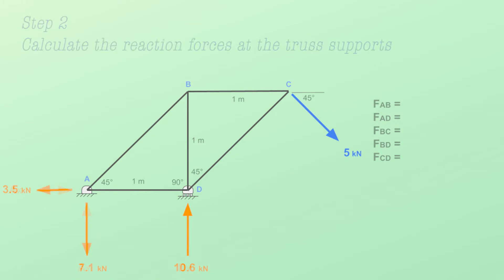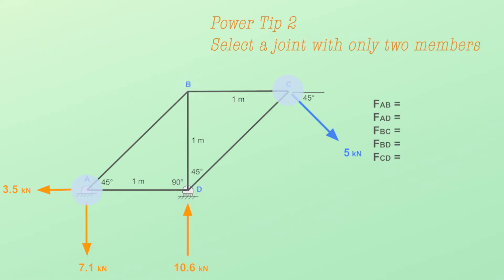Step number 2 – Calculate the reaction forces at the truss supports. Step number 3 – Select the joint. Power tip 2 – Select the joint with only 2 members. This will make sure you can calculate all of the forces at the joint.